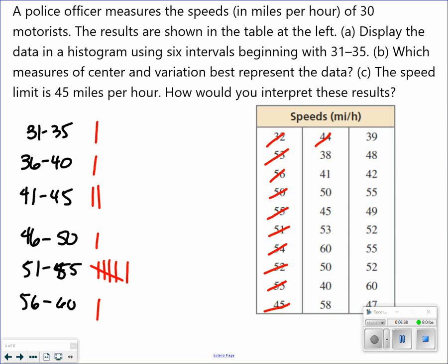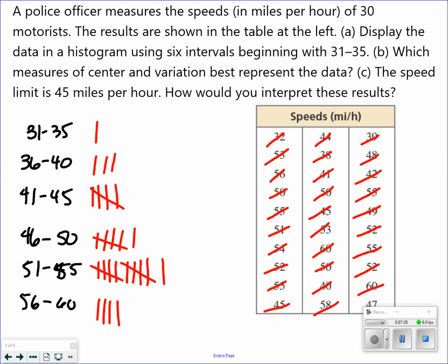So, again, you're basically tallying up how many fall in each one of these intervals. So 44, 38, 41, 50, 45, 53, 60, 50, 40, and 58. Now, for our last one here. 39. Last column, I mean. 48, 42, 50, 55, 49, 52, 55, 52. Again. 60. And 47. So there was one in the first interval, 3, 5, 6, 11, and 4.